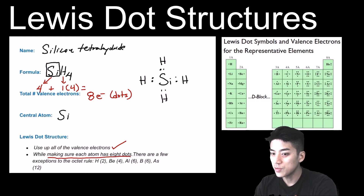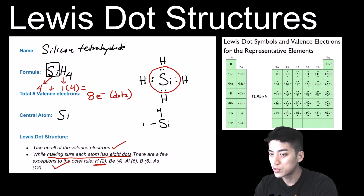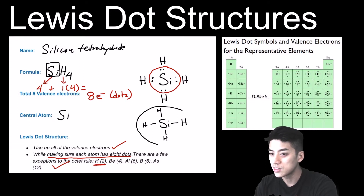Does each element have eight dots? Silicon has eight surrounding it, so it's fine. But hydrogen is an exception to the octet rule — hydrogen needs just two electrons. Another way to represent this Lewis dot structure is by replacing the shared bonded dots with solid lines. Remember, you can only use solid lines for bonded or shared pairs of electrons.